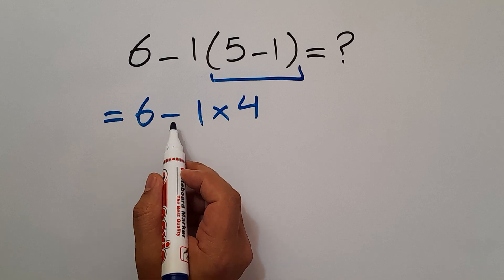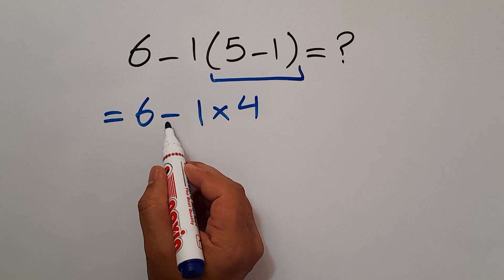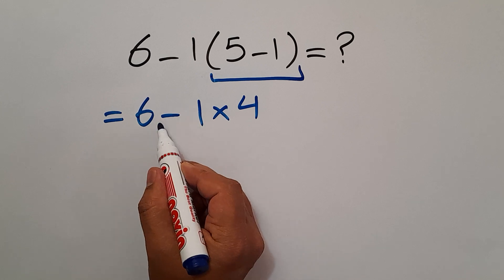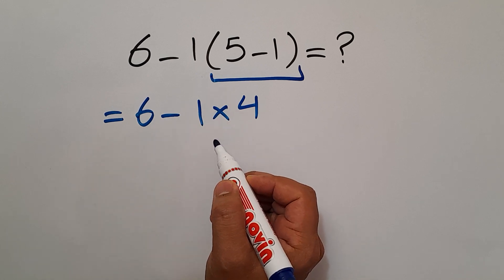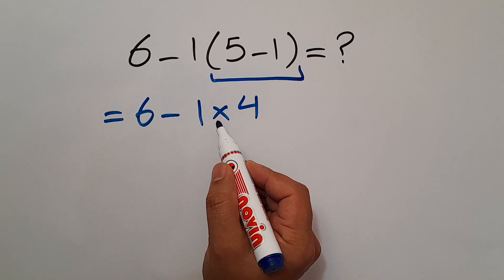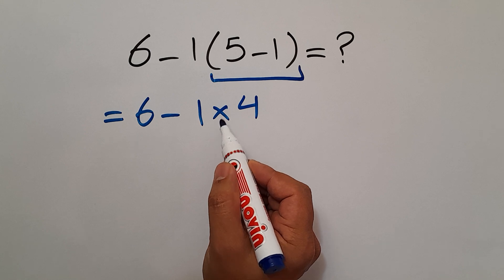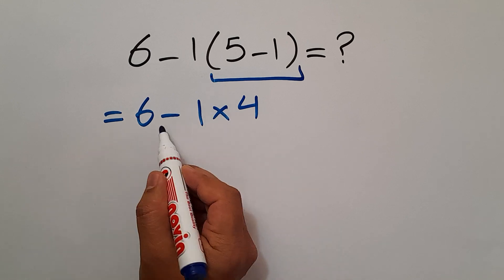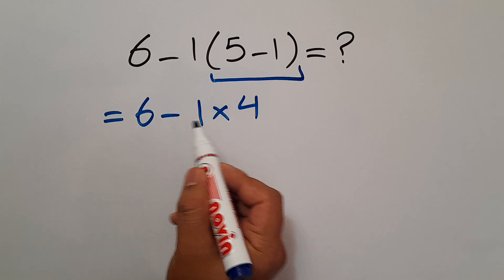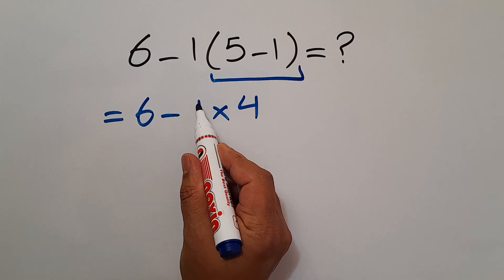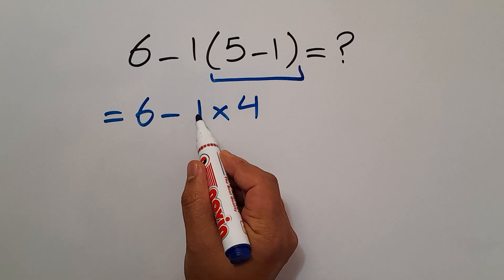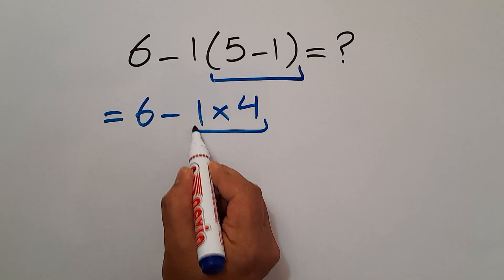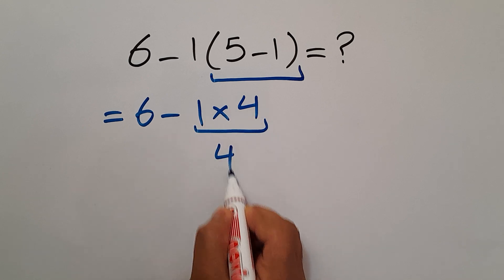Now we have this subtraction and this multiplication. According to the order of operations, multiplication has higher priority than subtraction. So first we have to do this multiplication: 1 times 4 equals 4.